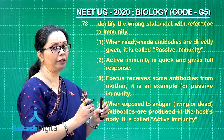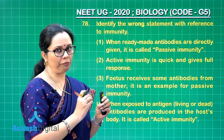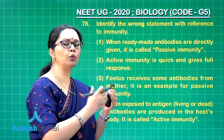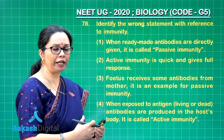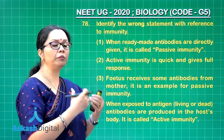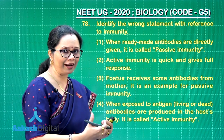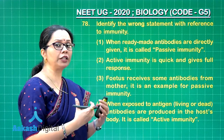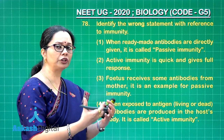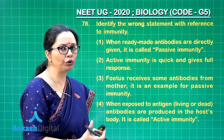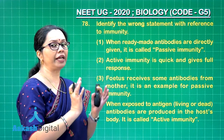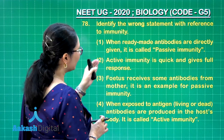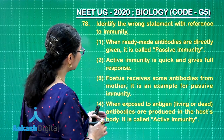Active immunity is incorrect to call quick because it takes time — that is the lag phase. When we are exposed to an antigen for the first time, our immune system takes time to recognize it, mobilize, and proliferate lymphocytes to make clones, and finally mount the attack. So the correct answer is option 2.